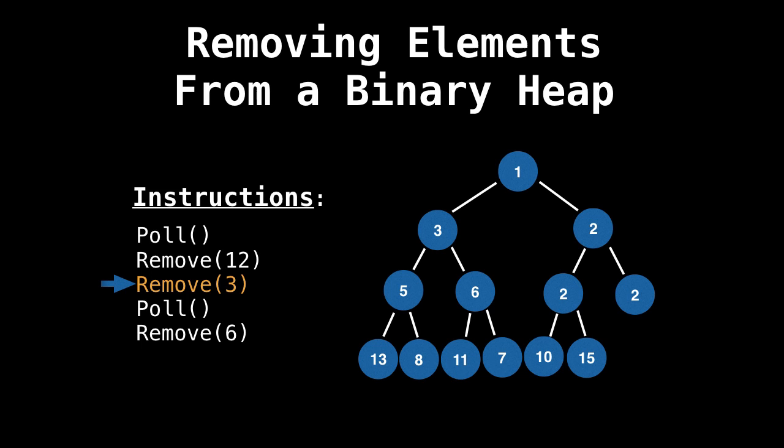Now we want to remove three, same thing as last time, search for three in the tree. Three wasn't far, it was just two nodes away. So now to remove an element, again, swap it with the last node in the tree, drop it.